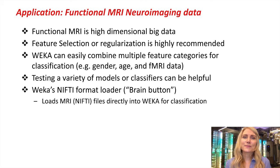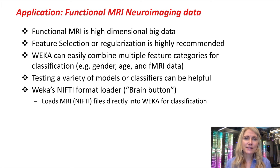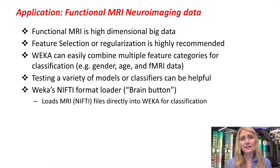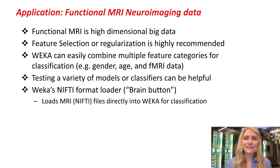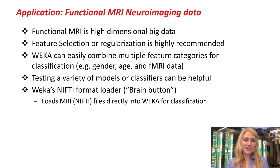In summary, functional MRI data is high-dimensional, so feature selection and regularization are highly recommended. WEKA can be very useful for classifying these data since it has the capability of handling large datasets and combining across multiple feature categories like nominal and numeric data, as well as handling missing data. Testing out a variety of models and classifiers can be very helpful. Lastly, the WEKA group has kindly added a brain button to their software, so you can now load MRI data files in NIfTI format directly into WEKA for classification without needing to convert it to the attribute relation file format. I hope that you'll enjoy testing out WEKA for classification on brain imaging data as much as I have. Thanks so much.